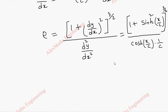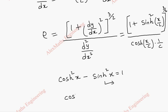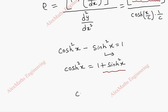Now, we have an identity in hyperbolic functions: cosh²(x) minus sinh²(x) equals 1. So if we rearrange, cosh²(x) equals 1 plus sinh²(x). In place of 1 plus sinh²(x/c), we are going to use this hyperbolic identity.